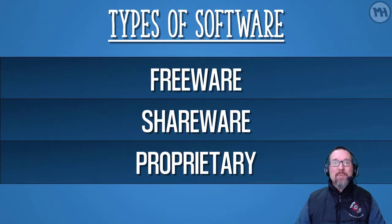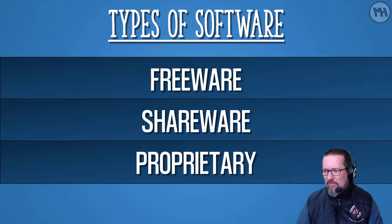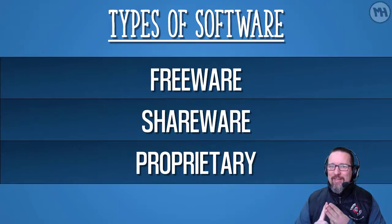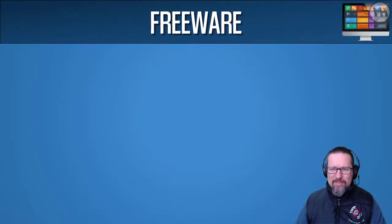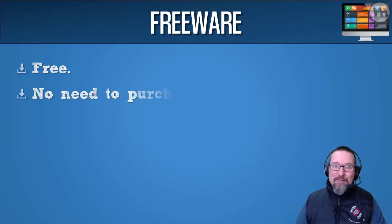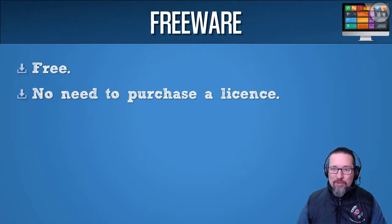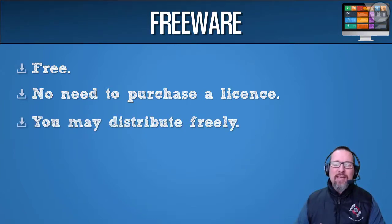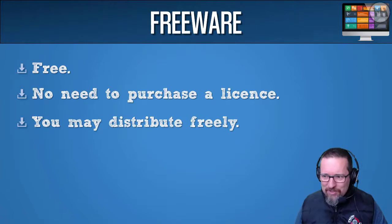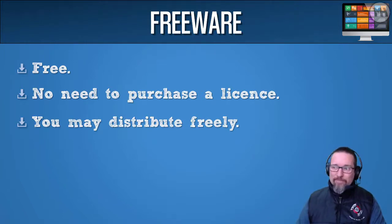Let's move on to types of software. We're going to look at three different types: freeware, shareware, and proprietary software. Freeware is completely free — there is no need to purchase a license or buy the software. If someone's trying to sell you freeware, don't buy it. You may distribute the software freely; you may not sell it. You can give it away and share it with as many people as you like.